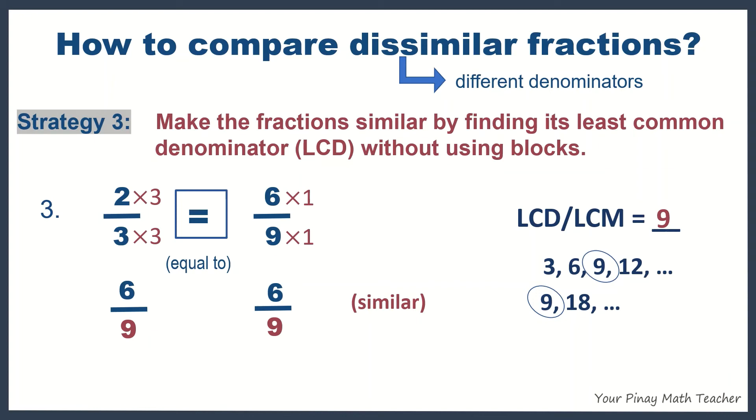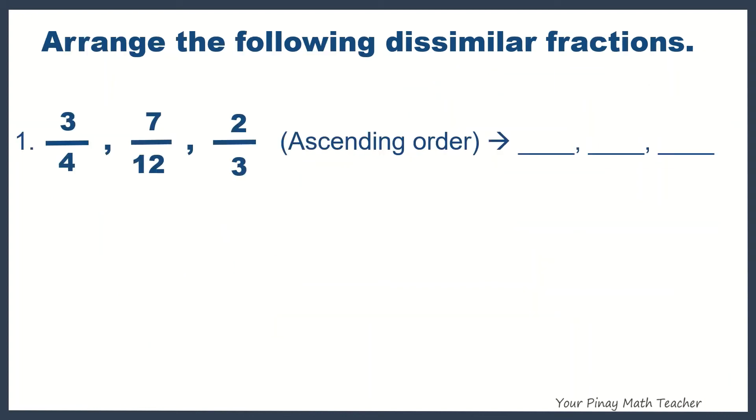At this time, let us arrange the following dissimilar fractions such as 3 fourths, 7 twelfths, and 2 thirds in ascending order or from the least to the greatest.